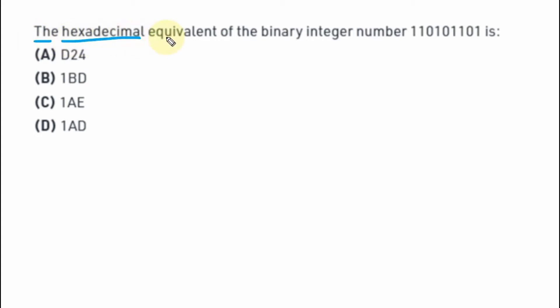The hexadecimal equivalent of the binary integer number. So here we are given a binary integer number. First of all, we are going to note down this binary integer number, which is 1101101101. So this binary number, we want to convert to hexadecimal.